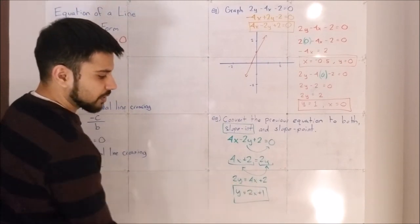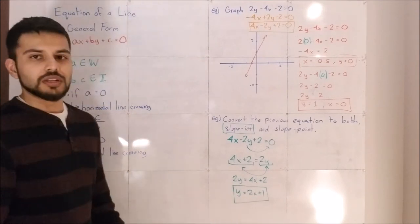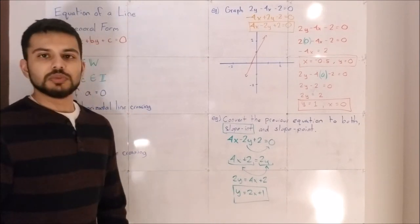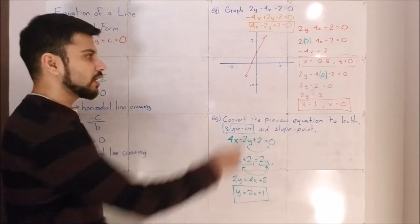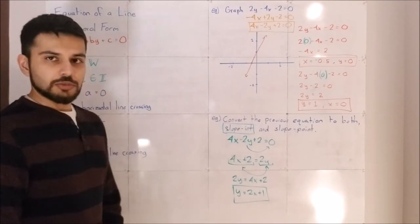And then you can solve for the other point by making y equal to 0. If y equals 0, 2x plus 1, the 1 comes over, you get negative 1 equals 2x. Divide both sides by 2, negative 1 over 2 equals x. Same idea over here. So it works for slope-intercept as well.